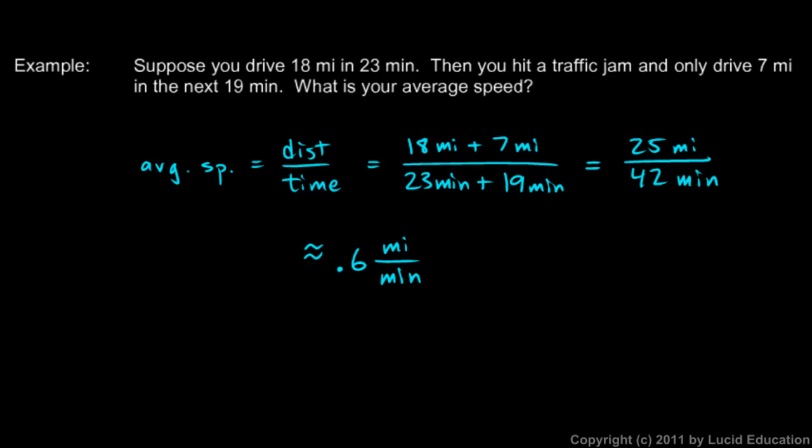Now, miles per minute is not a very common unit for speed, but it should make sense. The concept is that we go this far, 0.6 miles each minute, and that's on average because we computed the average speed. So it tells us how many miles are covered each minute on average. Miles is a unit for distance. Minutes is a unit for time. Dividing miles by minute gives us miles per minute, which is a unit for speed.